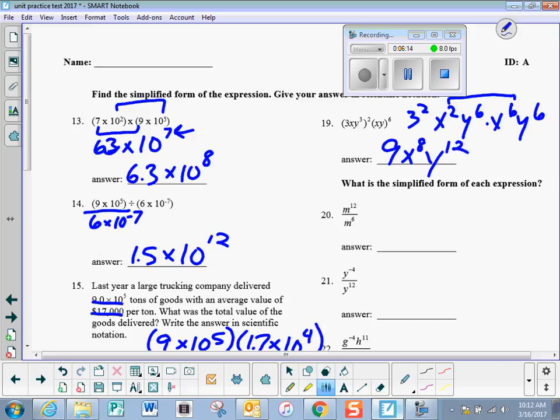Number 20, when I divide things with the same base, I subtract exponents. 12 minus 6 is 6.